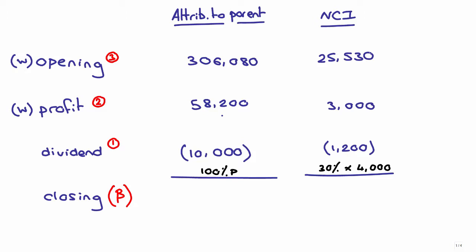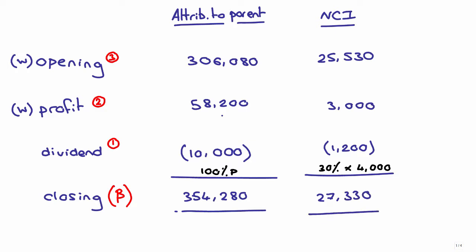Once you've done all of that, you can total everything up. The closing equity attributable to the parent shareholders is 354,280, and the amounts attributable to the NCI are 27,330.